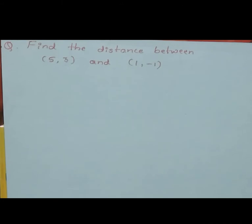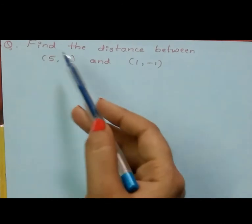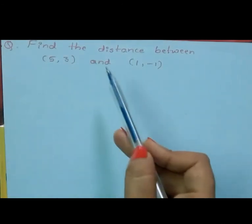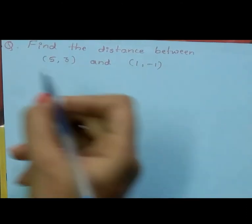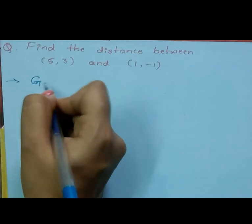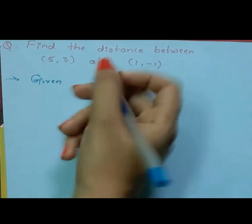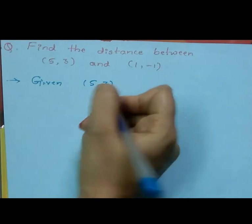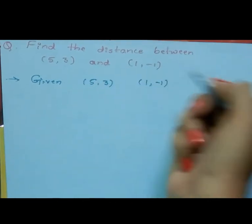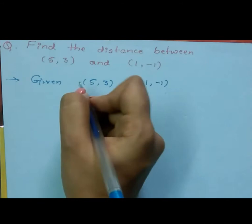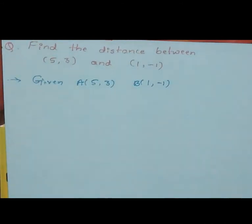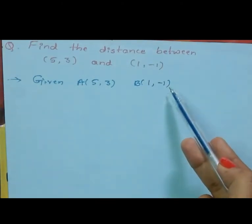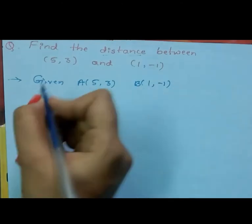Now let us solve a problem on the distance formula. The question is: find the distance between (5, 3) and (1, -1). First we will write the given things. Given two points: A(5, 3) and B(1, -1).